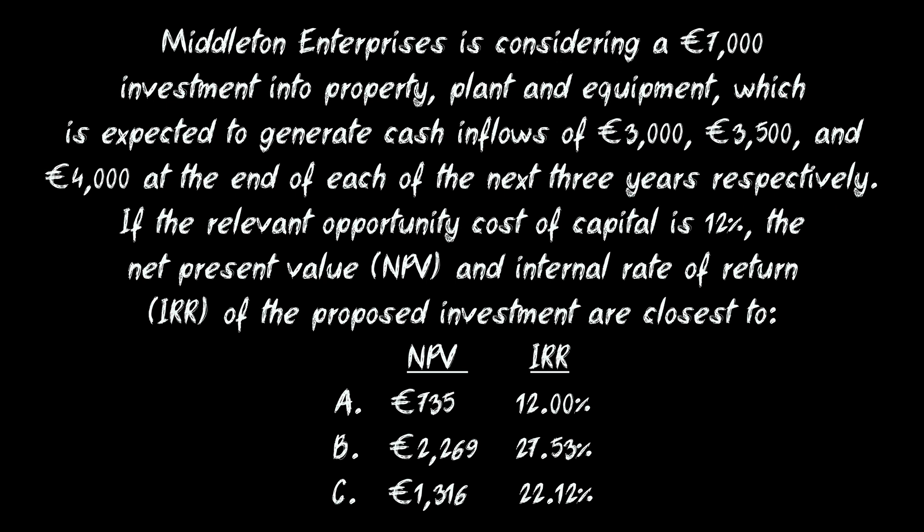Middleton Enterprises is considering a €7,000 investment into property, plant and equipment, which is expected to generate cash inflows of €3,000, €3,500 and €4,000 at the end of each of the next three years respectively. If the relevant opportunity cost of capital is 12%, the net present value NPV and internal rate of return IRR of the proposed investment are closest to, and what follows are three combinations of NPV and IRR results.